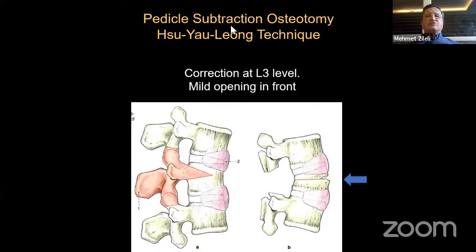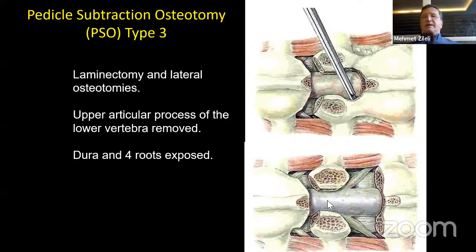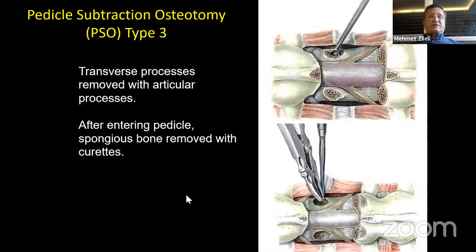There are also some modifications in such techniques, like a Chinese technique with a mild opening in the front. Laminectomy and lateral osteotomies are done, the upper articular process of the lower vertebra is removed, and dura and nerve roots are exposed. If you don't do it, especially in the lower lumbar levels, you can cause some compression of the roots on the lateral parts. Transverse processes must be removed.